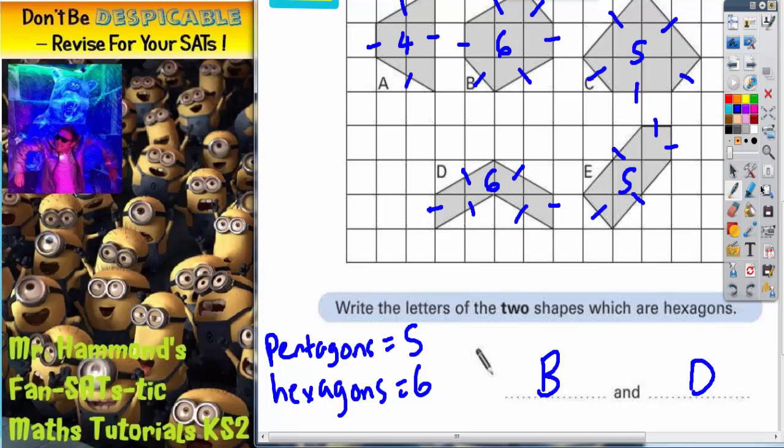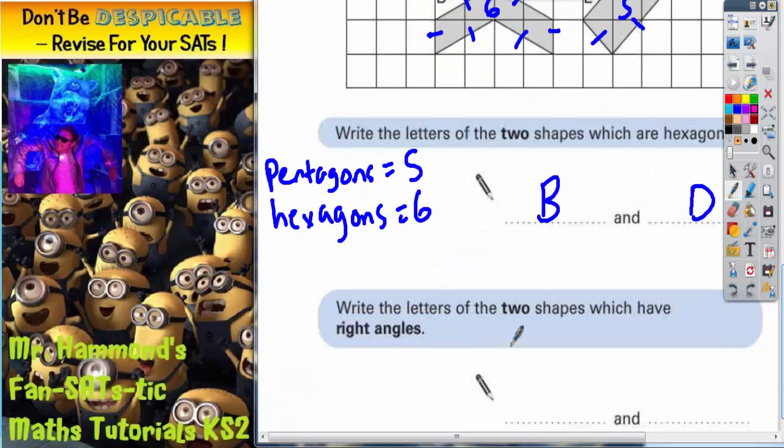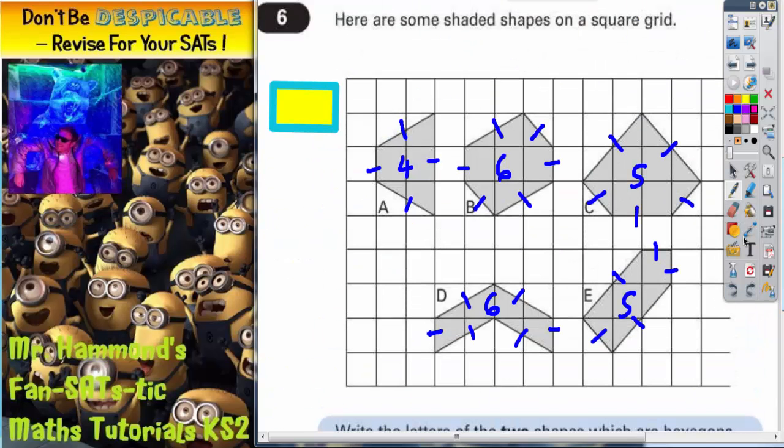Second part of the question says, write the letters of the two shapes which have right angles. Well, a little trick for you to do is that to check for right angles, get a piece of tracing paper,